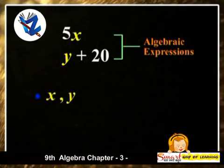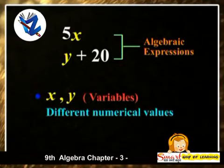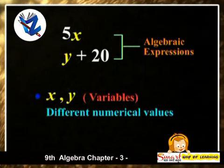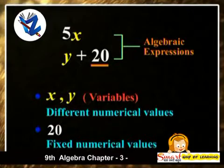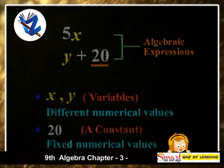Here, x and y are called variables as they are having different numerical values, while 20 is having a fixed numerical value and it is called a constant.